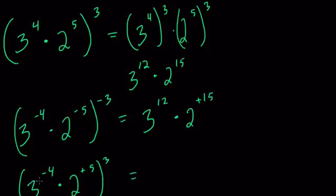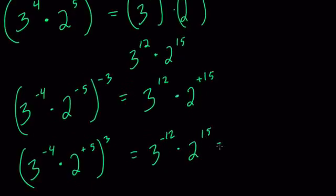But in the second case, you have 3 to the negative 4 to the 3rd is 3 to the negative 12th, and then times 2 to the 5th to the 3rd power, or 2 to the 15th. In this case, you have 2 to the 15th over 3 to the 12th.